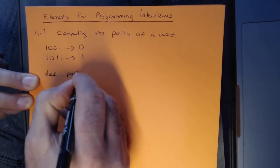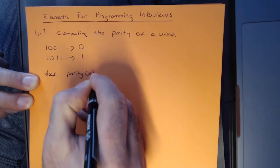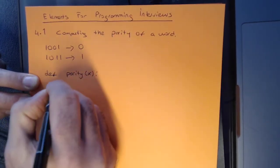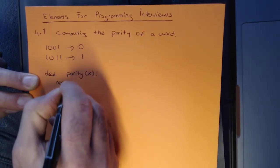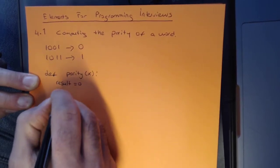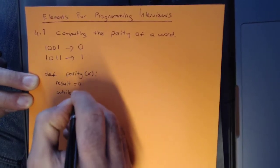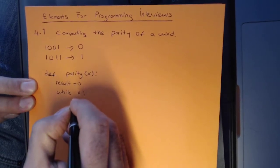We're defining a parity function which takes a binary word, and we're going to keep track of the result, which will start with 0.